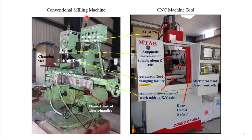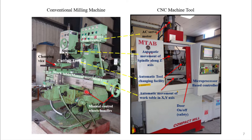Let us take the example of a conventional milling machine and how computers improve its performance. A conventional milling machine has a spindle, a table, a clamping vice holding the workpiece, and a cutting tool on the spindle. It is a vertical milling machine with a DC motor drive and gearbox. By changing the gearbox settings, various cutting speeds are achieved. The work table and tool movement are manually controlled, with manual control wheels visible. Accuracy and productivity are entirely dependent on the operator.